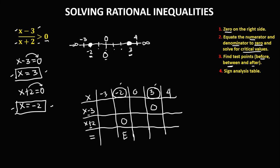For the test points, start with x equals negative 3. For the numerator: negative 3 minus 3 equals negative 6 — take the sign only, that's negative. For the denominator: negative 3 plus 2 equals negative 1 — sign is negative. Negative divided by negative gives a positive result.